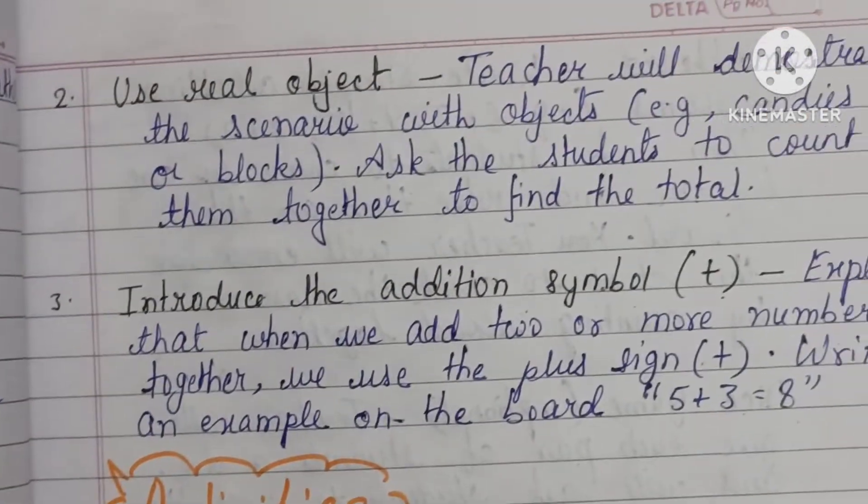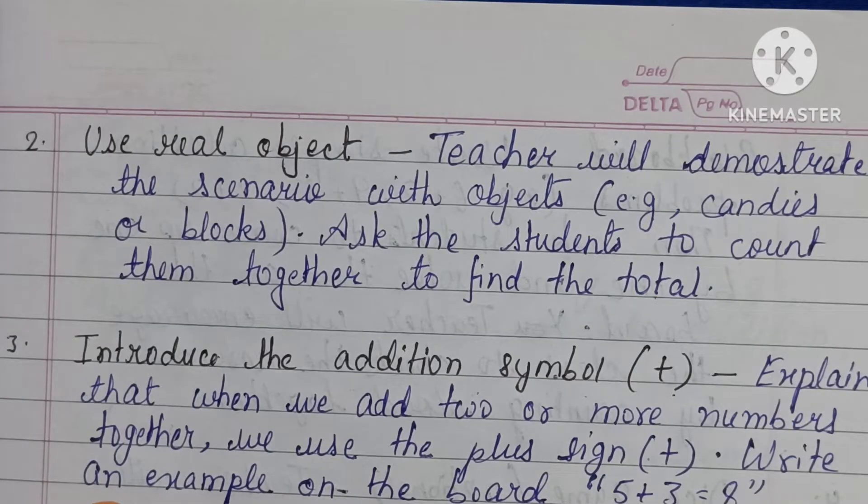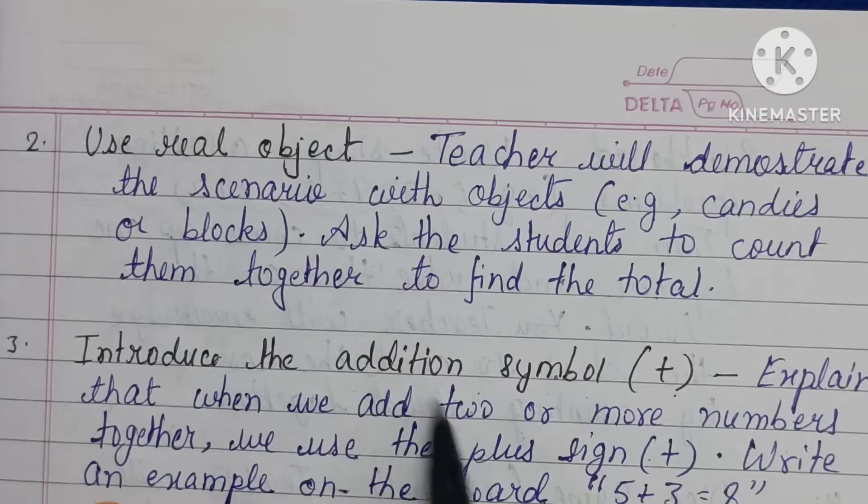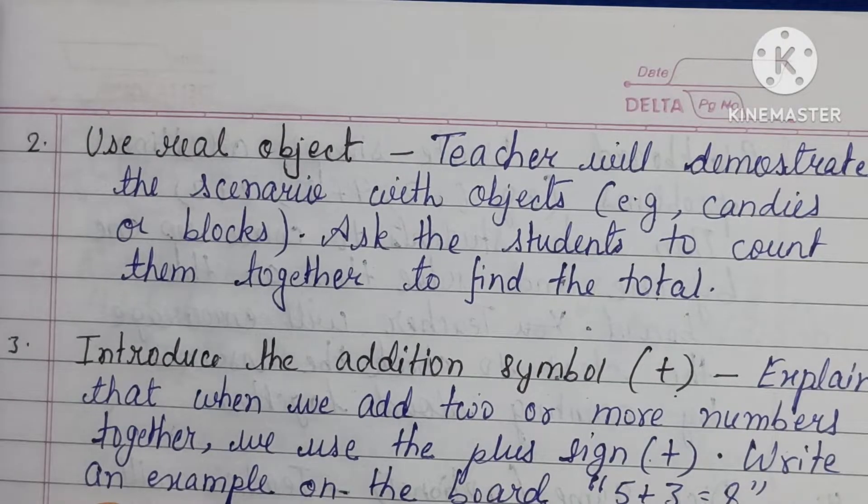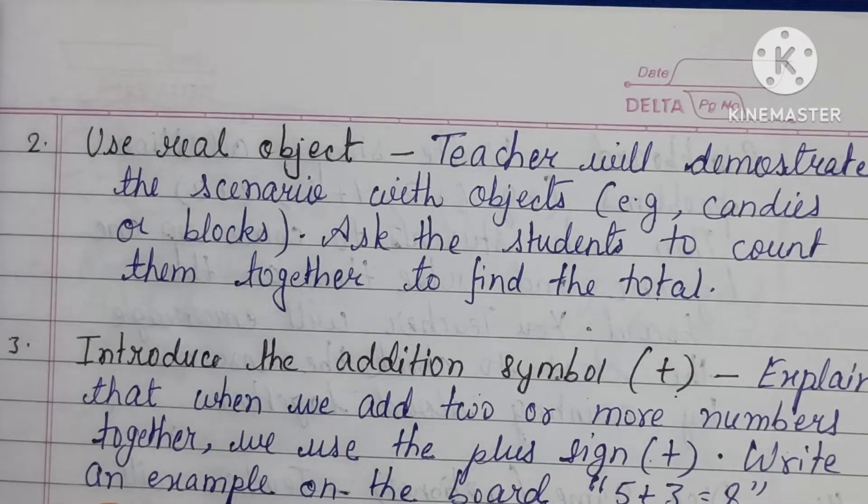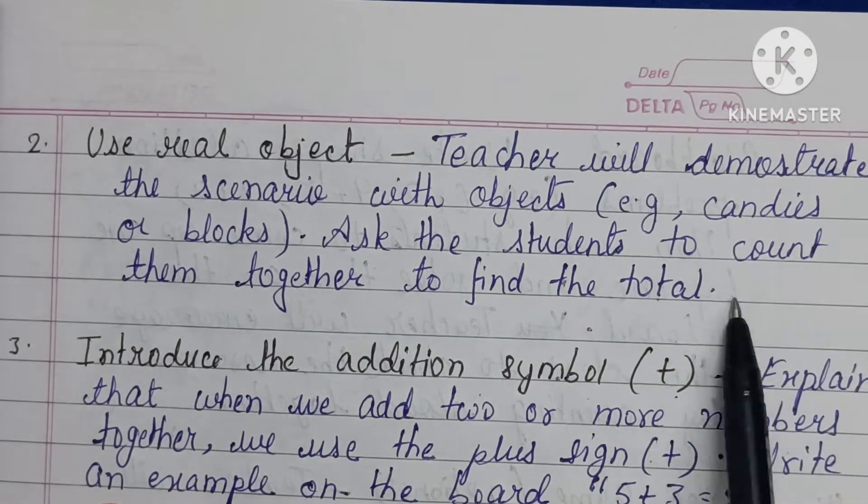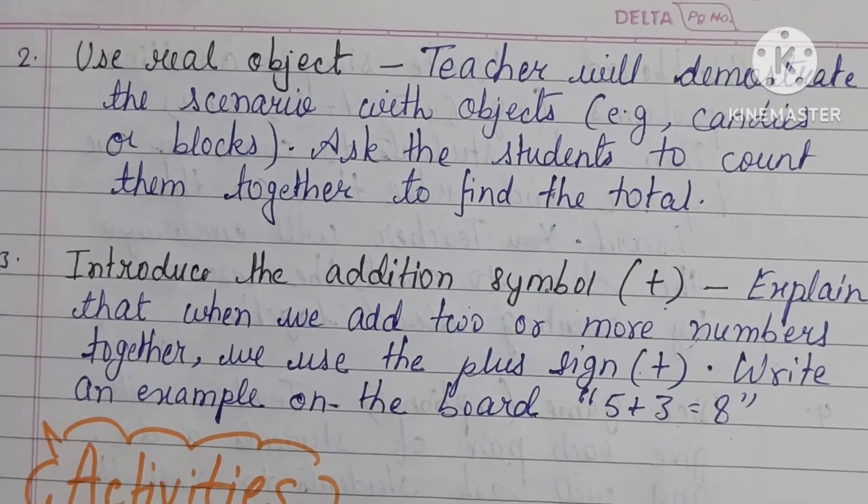To ask this question to the students, you can use real objects also. Like you can demonstrate the scenario by taking five candies in one hand and three candies in the other hand. Then you can ask, if you have five candies and your friend gives you three more, then how many candies do you have? Then students will count them together to find the answer.